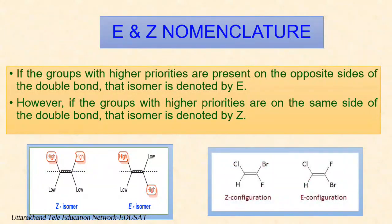The simple convention of denoting geometrical isomerism by cis-trans descriptors is not sufficient when there are more than two different substituents on a double bond. To differentiate the stereochemistry, a new system of nomenclature known as E/Z notation is adopted. According to this method, if the groups with higher priorities are present on opposite sides of the double bond, that isomer is denoted by E. However, if the groups with higher priorities are on the same side of the double bond, that isomer is denoted by Z.